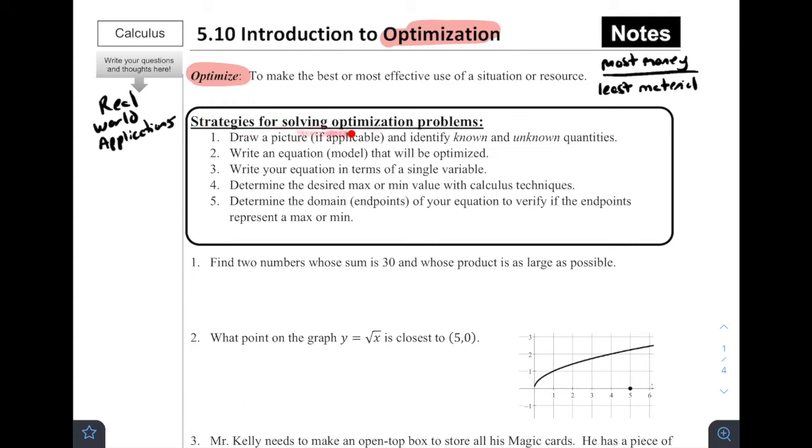So first, let's talk about strategies for solving optimization problems. The first in general is very similar to related rates back in the last chapter. We would say, draw a picture if applicable and identify known and unknown quantities. Second, you're going to try to write an equation model that will be optimized. So what are you trying to optimize? What equation could you write in order to make that happen? Third, write your equation in terms of a single variable. So in terms of a single variable, that is a key piece.